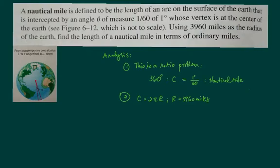This really is just a simple ratio problem in that for 360 degrees which corresponds to the circumference of the earth, 1/60th of a degree is what we're asked to find as the nautical mile because this is just an arc basically. C equals 2 pi r where r is the radius of the earth. Now plug all this in and we can easily find what the nautical mile is.